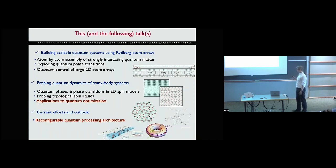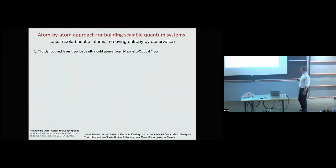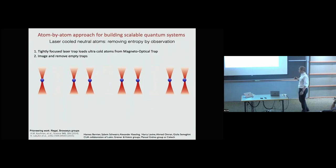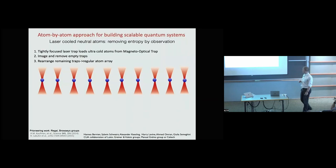In our approach we build quantum systems starting from individual atoms and trapping them in optical tweezers. We typically start now with hundreds — actually right now we want thousands — of tweezers and try to grab these atoms. We focus the tweezers very tightly such that each tweezer contains at most one atom. After loading, there are some imperfections in the array, so we take a picture of the atoms, figure out which traps are full and which are empty, and then rearrange them into the desired configuration.